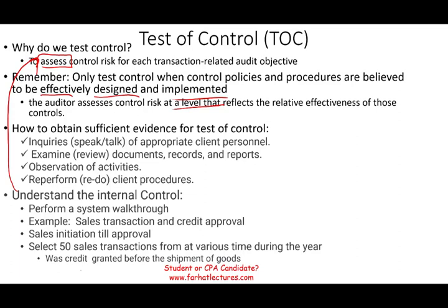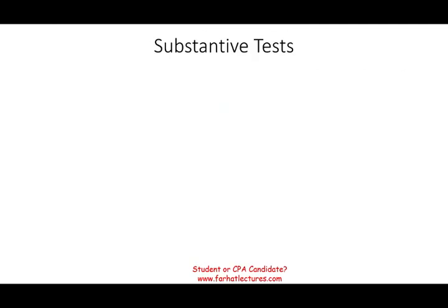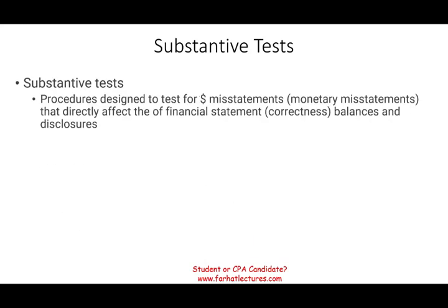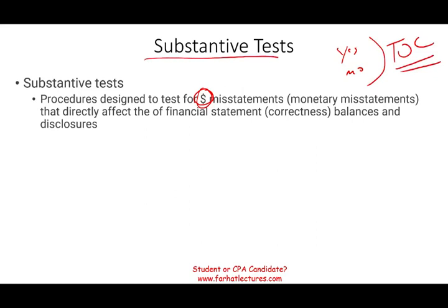For example, you select 50 sales transactions to determine whether credit was granted before the goods were shipped. When it comes to substantive testing, unlike test of control where you're looking for yes or no, here you are looking at the dollar amount — monetary misstatement — that directly affects the financial statements. Are the numbers correct? The auditor relies on three types of substantive testing.